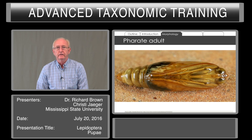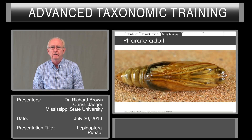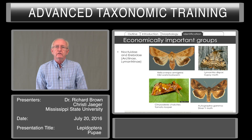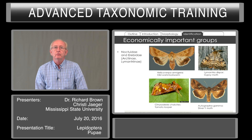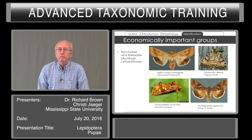Here's another pharate adult — I think this is a Paraloid alma. You can see the adult inside, the compound eyes; it's intact but it hasn't shed the pupal skin. Some of the groups of economic importance — Noctuidae and Arctiidae — have some characteristics of the pupae that are important to learn.